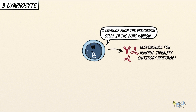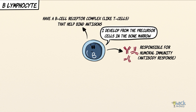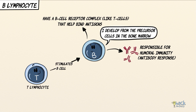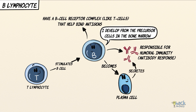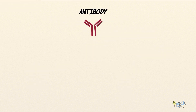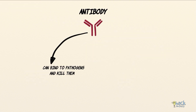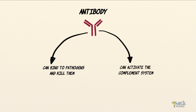B cells develop from precursor cells in the bone marrow and are responsible for humoral immunity. Like the T cell, a B cell has a B cell receptor complex that helps bind to and recognize antigens. On stimulation by antigens or signals from the T cell, a B cell becomes a plasma cell that secretes antibodies. Antibodies produced by B cells can bind to pathogens and destroy them, and can also activate the complement system, promoting inflammation and helping clear damaged cells and microbes.